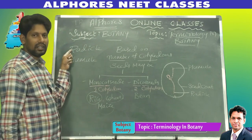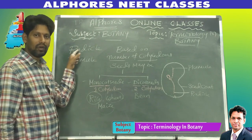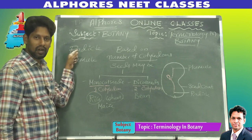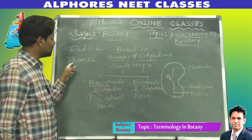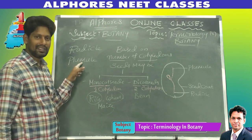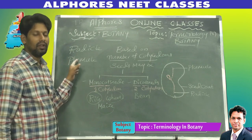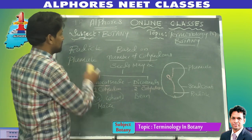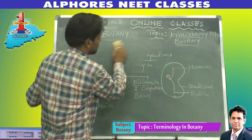Radicle is the lower end of the embryonal axis and develops into the root system. Plumule is the upper end of the embryonal axis and develops into the shoot system.